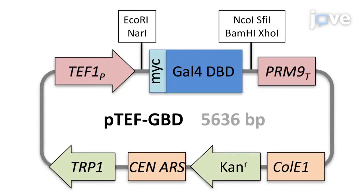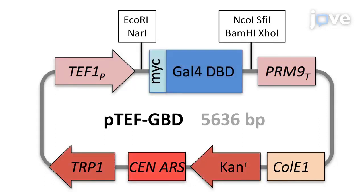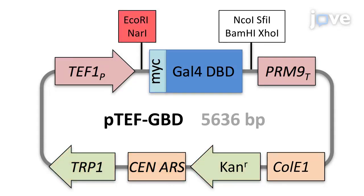A new yeast-2 hybrid bait plasmid, PTF-GBD, was constructed for this procedure as described in the text protocol. This plasmid produces GAL4-DNA-binding domain fusion proteins within a TRP1-centromere-based low-copy plasmid carrying the kanamycin resistance gene, and also allows cloning of bait fragments both upstream and downstream of the GAL4-DNA-binding domain.